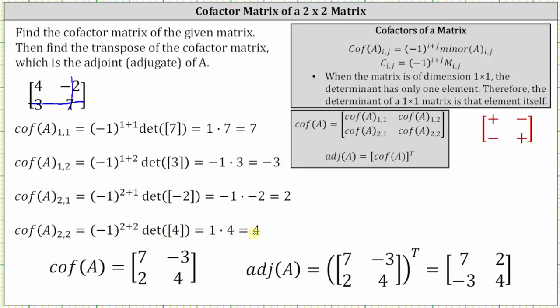And now we have the four elements for the cofactor matrix. Row one is seven, negative three. Row two is two, four. And now to find the adjoint of A, we need to find the transpose of the cofactor matrix. To transpose the matrix, column one in the cofactor matrix becomes row one in the adjoint of A. And column two in the cofactor matrix becomes row two in the adjoint of A. So now we have the cofactor matrix and the adjoint of matrix A. I hope you found this helpful.